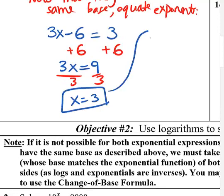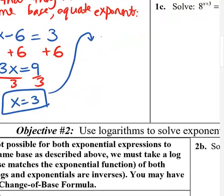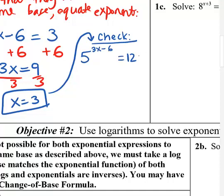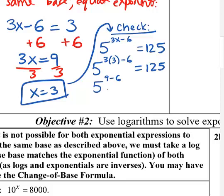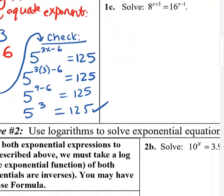You can always check your solution. The original equation was 5^(3x-6) = 125. Replacing x with 3: 5^(3·3 - 6) = 5^(9-6) = 5^3 = 125. That checks out.